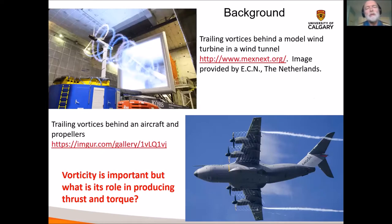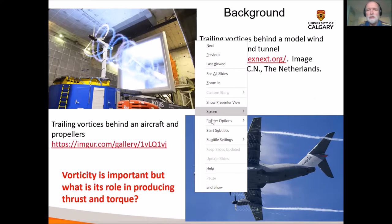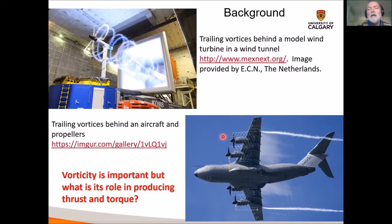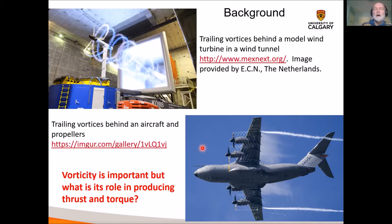Here is the motivation for this work. If you look at flow visualizations of the flow through wind turbines — this is a beautiful photograph from an experiment at the ECN in the Netherlands where smoke is released from two of the blade tips — you can see the very strong helical vortices formed downstream of the wind turbine. Propellers are also a technology that can be analyzed with blade element theory. In fact, blade element theory was first developed for aircraft propeller design. You can see very coherent helical vortices trailing from the tips. It's clear from flow visualizations that vorticity is important. But what is its role and how does it help to produce thrust and torque on the wind turbine blades?